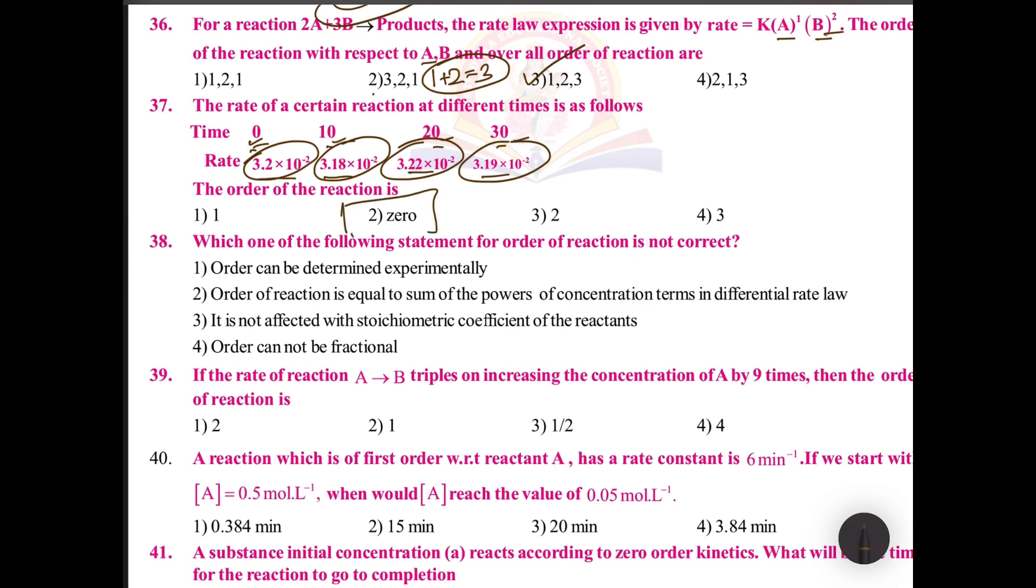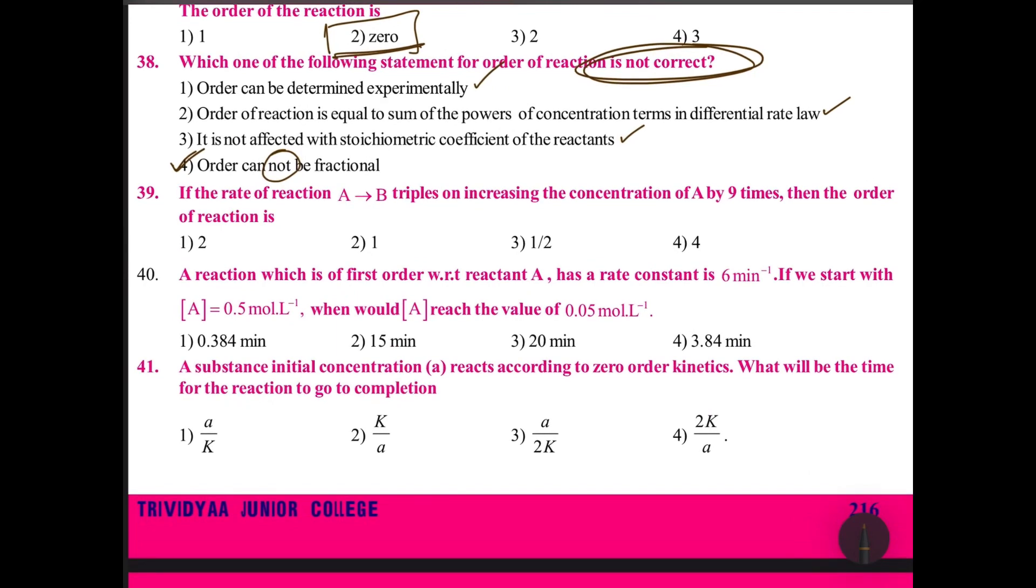Which one of the following statement for order of reaction is not correct? Order can be determined experimentally - exactly. Order of reaction is equal to the sum - exactly. It is not affected with the stoichiometric - exactly. Order cannot be... Order can be fractional, order can be negative, order can be positive, order can be zero.